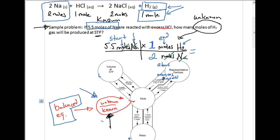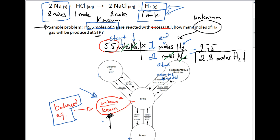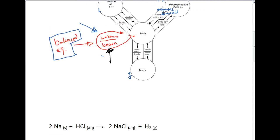Using a calculator, I get 2.75. We have to consider significant figures — 5.5 has two sig figs, so we round our answer to two sig figs, which gives us 2.8 moles of H₂ gas produced. That's our answer for this first problem. Now let's move on to another problem and show how we can attack it from a different angle using the same balanced equation.